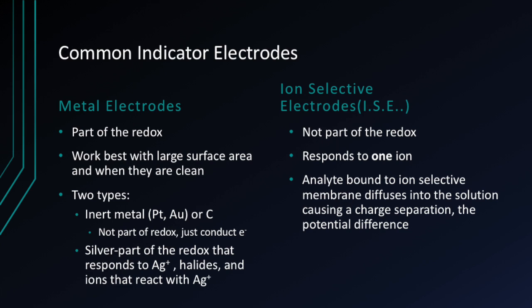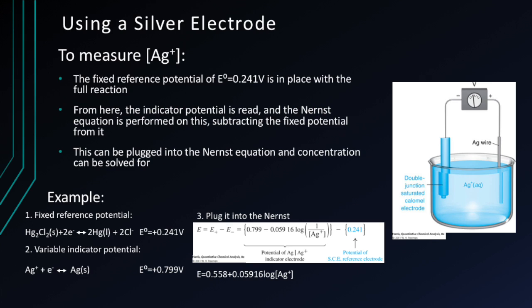Common indicator electrodes are the metal electrodes and the ion-selective electrodes (ISE). Metal electrodes are part of the redox and work best with large surface areas when they are clean. Inert metals — platinum, gold, or carbon — are not part of the redox; they just conduct electrons. Silver is part of the redox and responds to silver+ ions, halides, and ions that react with silver+. ISEs are not part of the redox and only respond to one ion. The analyte bound to the ion-selective membrane diffuses into the solution, causing a charge separation, which is the potential difference. A silver electrode can be used to measure the concentration of silver+ ions as well as halides.